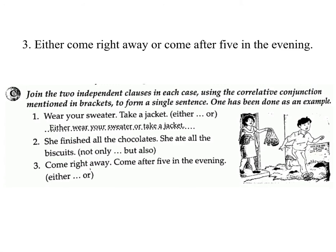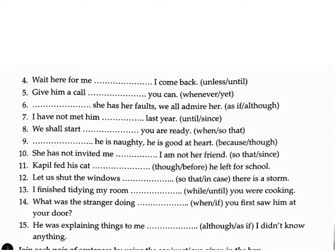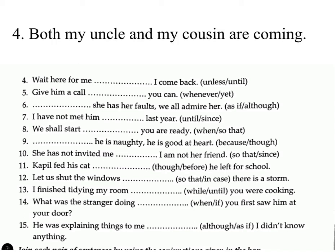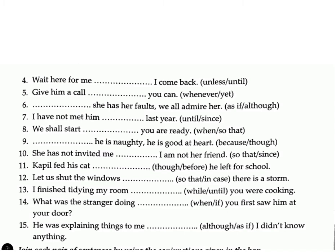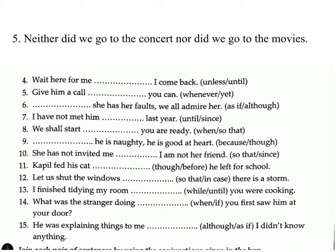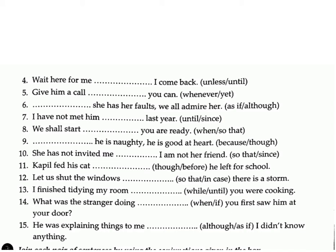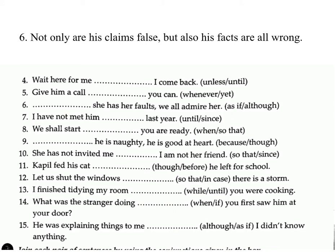Three: 'Come right away / come after five in the evening.' (either...or) Answer: Either come right away or come after five in the evening. Four: 'My uncle is coming / my cousin is coming.' (both...and) Answer: Both my uncle and my cousin are coming. Five: 'We didn't go to the concert / we didn't go to the movies.' (neither...nor) Answer: Neither did we go to the concert nor did we go to the movies. Six: 'His claims are false / his facts are all wrong.' (not only...but also) Answer: Not only are his claims false but also his facts are all wrong.